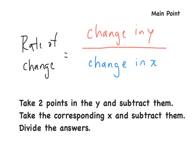The first topic we'll talk about is the rate of change. The rate of change is equal to the change in y over the change in x. Here are three steps to help you. First step: take two points in the y-coordinates and subtract them. Next step: take the corresponding x-points and subtract those. Then divide the answers. Write these three steps down — in the next slide we'll do some examples.